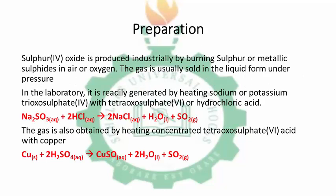Now, preparation of SO2. SO2 is prepared industrially by burning sulfur or metallic sulfide in oxygen or air. The gas is usually sold in the liquid form under pressure — that means after production, after the combustion, the gas is compressed to its liquid state under pressure.